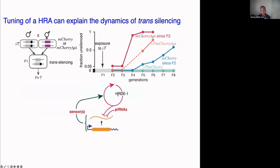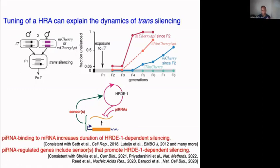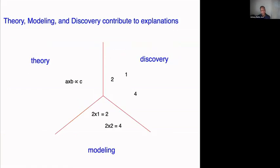With these ideas we can propose a specific model: HRD-1-dependent loops are silencing these genes. When a piRNA binding site is present — like with mCherry — silencing is enhanced by piRNA binding and lasts a long time. When that piRNA site is absent, you see recovery and potentially resistance as the loop weakens over time. A further insight from the literature is that sensors among genes regulated genome-wide by piRNAs must be promoting this HRD-1 loop.